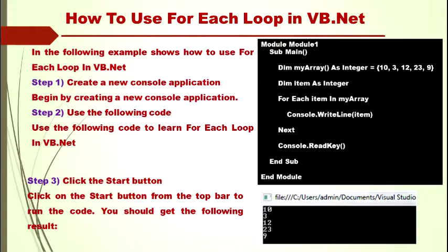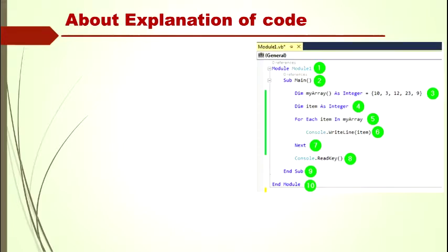Now proceed to the next — the explanation of the code we discussed in the previous slide. This is your code. Now we have to explain it line by line, and it is already marked 1, 2, 3, 4, like that.